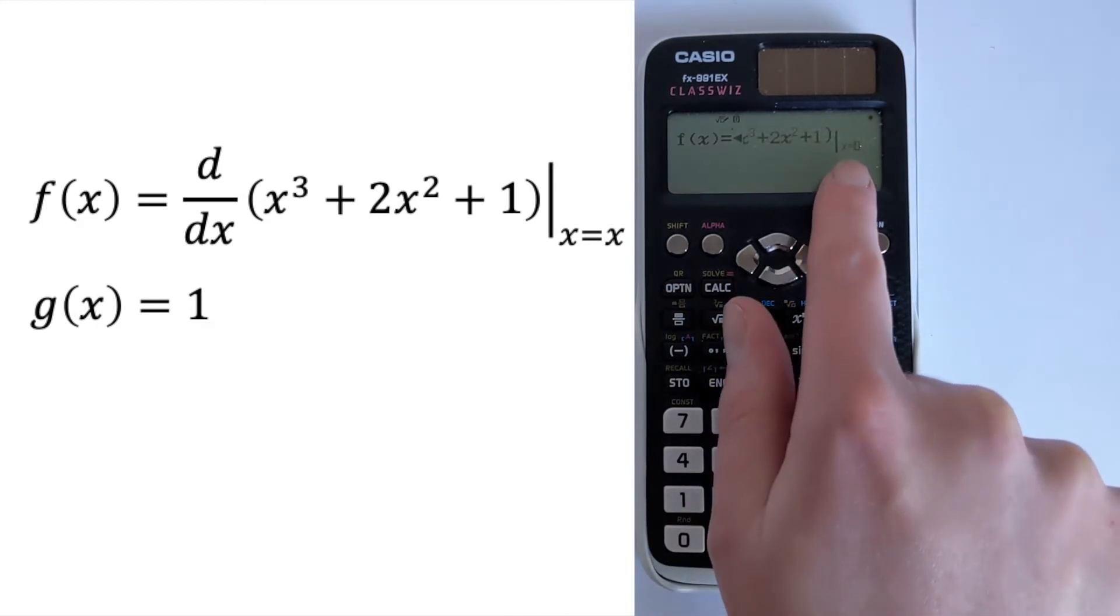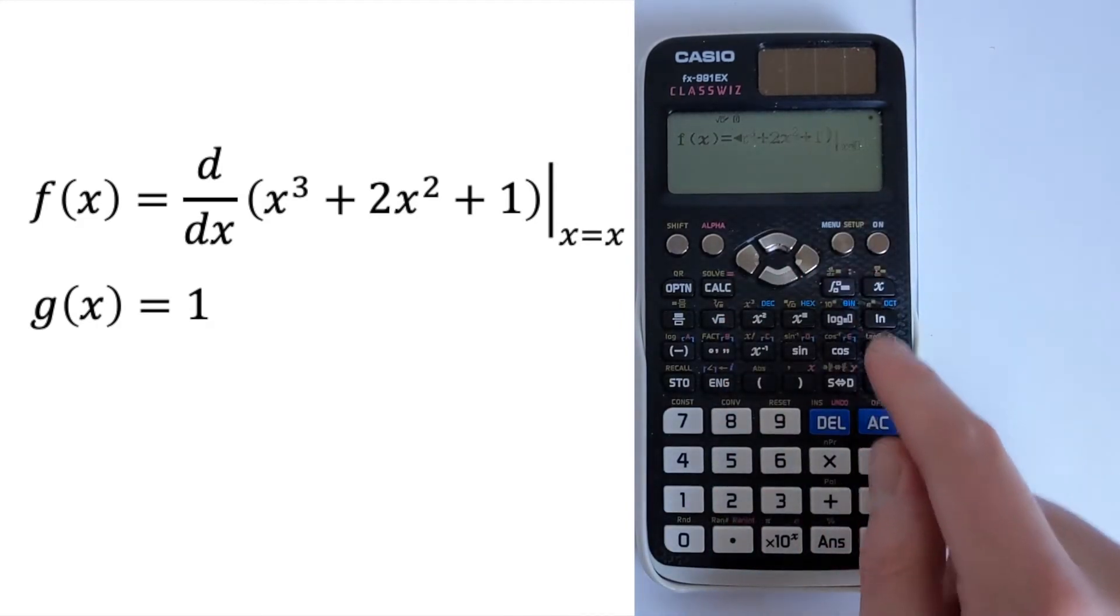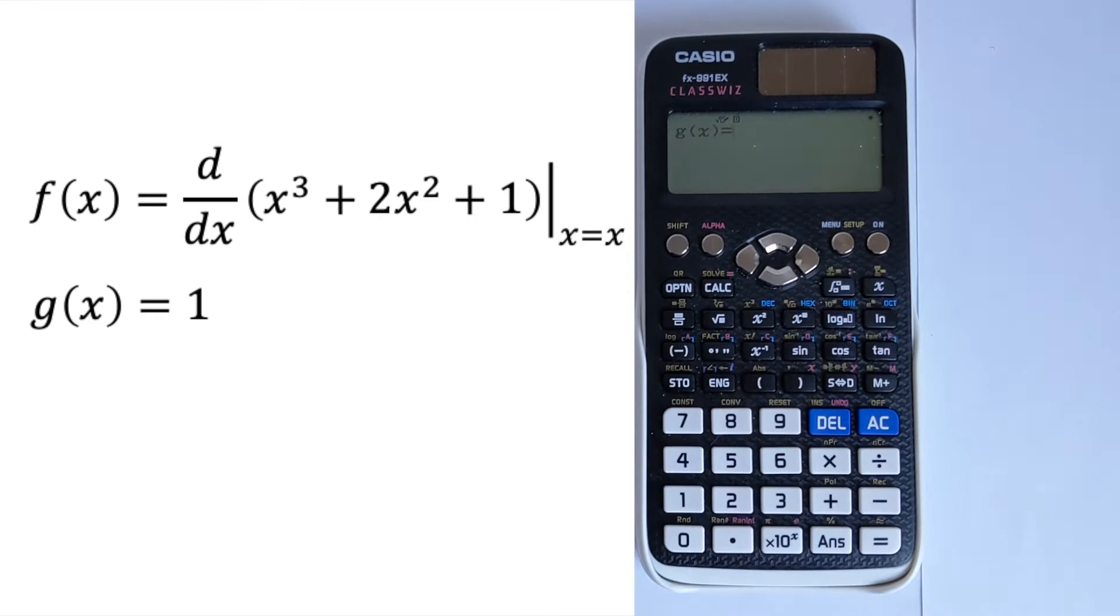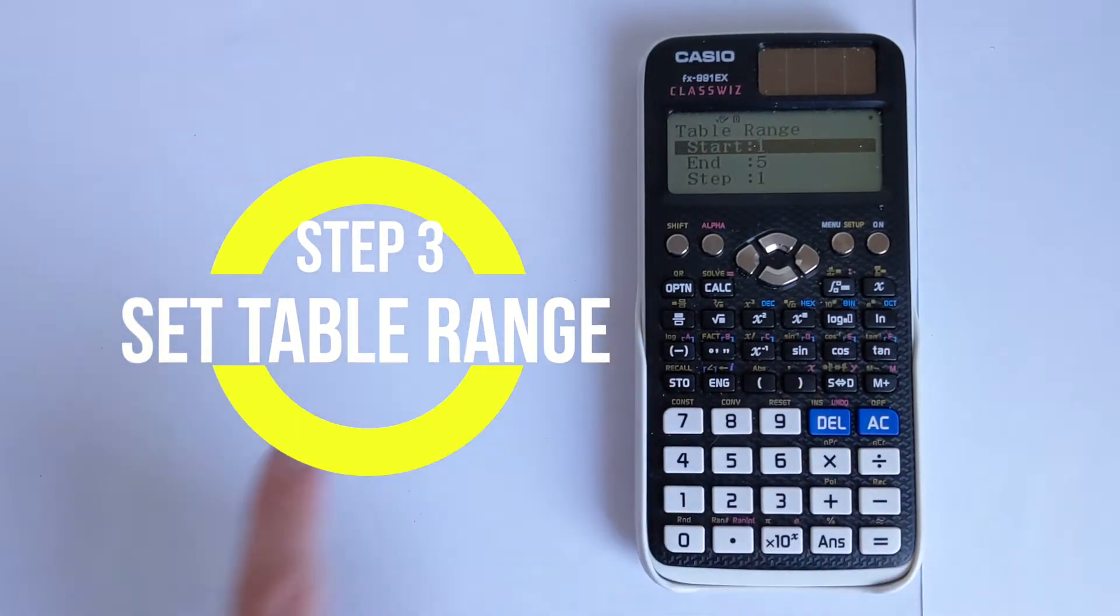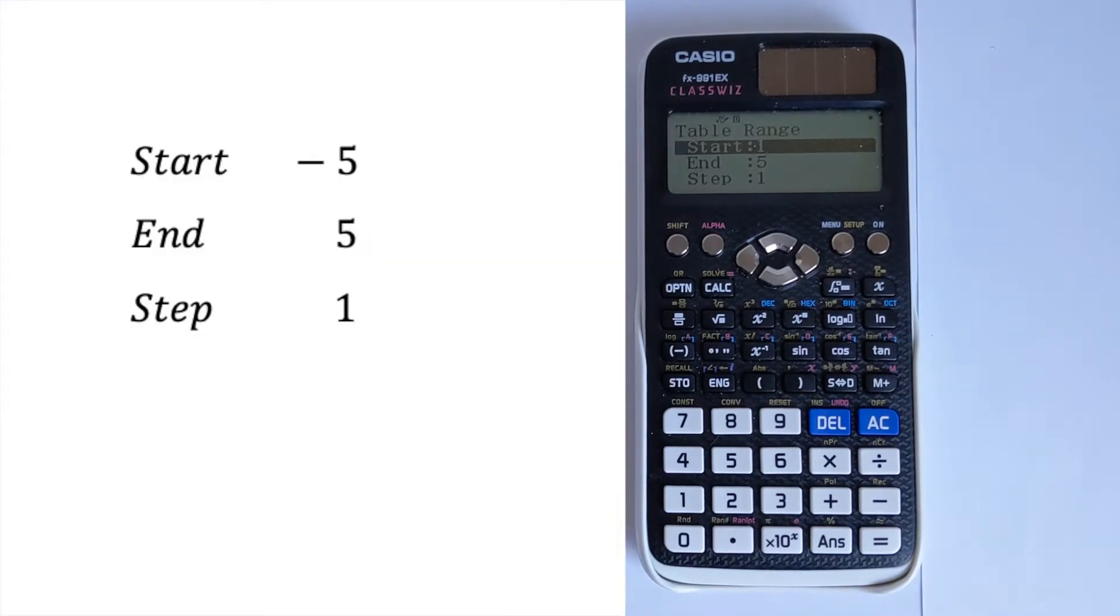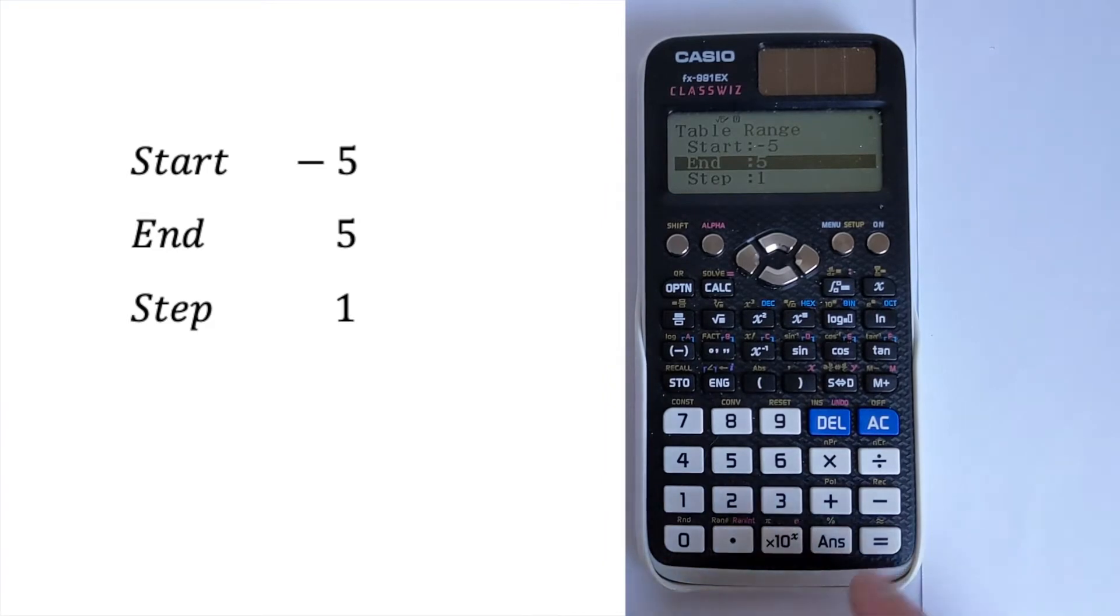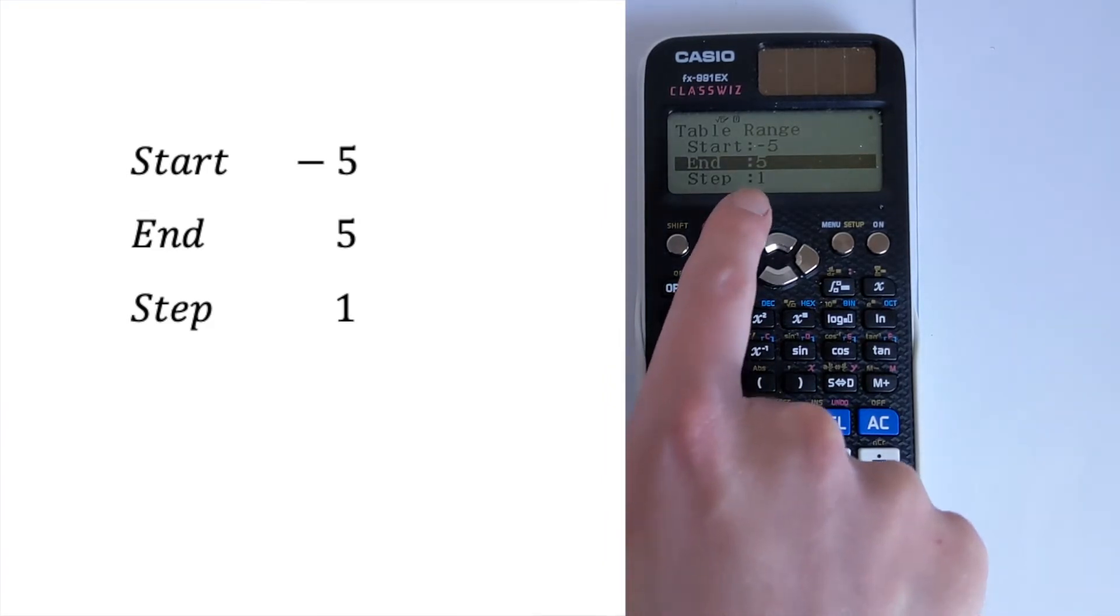And then at the very end here, we're going to have x equals x. Now we press equals, we can just define g(x) equal to 1 because we're not very interested in this. And then we can set our range. And we're told in the question, the stationary point occurs between -5 and 5, or there could be more than one stationary point. And we're going to do a step of 1.